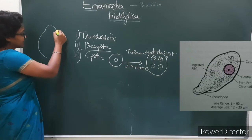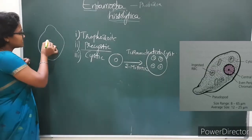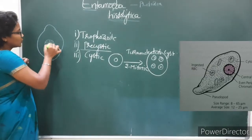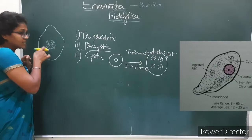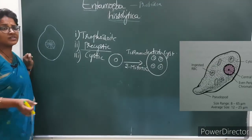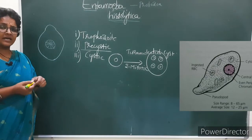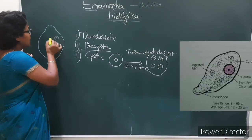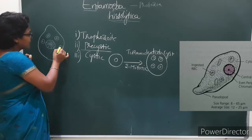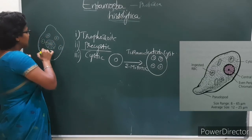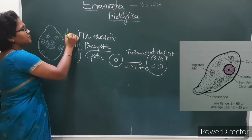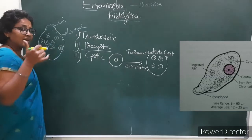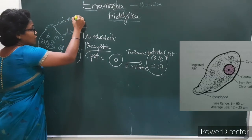In the trophozoite stage, it has a cartwheel-shaped nucleus. We can identify it by seeing this cartwheel-shaped nucleus — this is how we identify who is suffering with Entamoeba histolytica. So we can identify the trophozoite stage by this cartwheel-shaped nucleus. It also has contractile vacuoles and is covered with a plasma lemma. It has pseudopodia, which is a blunt finger-like structure called lobopodium.